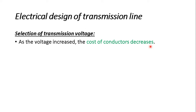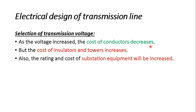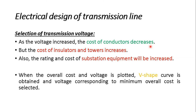As we increase the voltage, the cost of the conductor decreases. However, the cost of insulators and towers increases because the rating and cost of substation equipment such as transformers, switchgear, and protective devices increase. Superior types of insulators in larger numbers are required, and the height of the tower also increases. If we plot overall cost against voltage, a V-shaped curve is obtained, and the voltage corresponding to the minimum overall cost is selected. This is how the selection of transmission voltage is done.